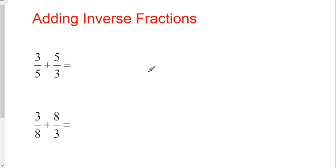Okay, I'm going to be showing you how to add inverse fractions. The way these are set up is when you're adding two fractions where you're adding a fraction to its flip of itself, or as we like to call inverses of each other. Three-fifths and five-thirds are inverses, this is what you're going to do.